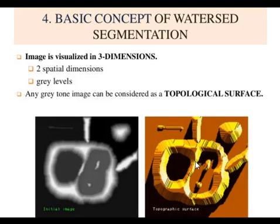See this image - the topographic image of this geographical location is shown in image 2. This is the initial stage. The image shown in 3D is based on two things: first is two spatial dimensions, 2D image, and gray levels.